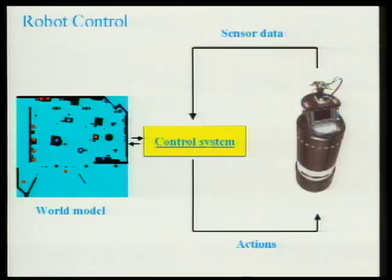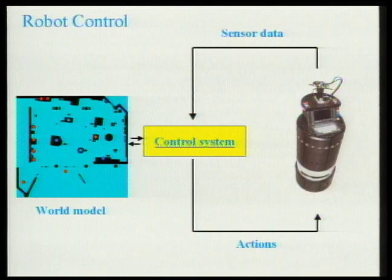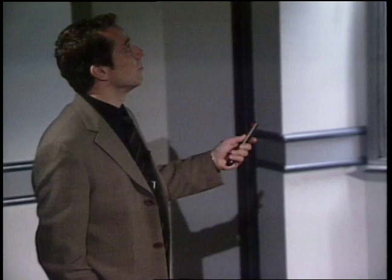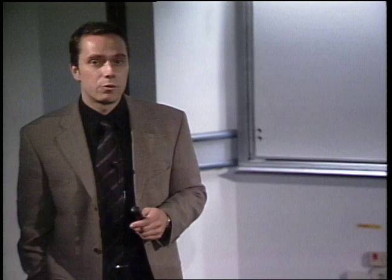On one hand, the sensor data the robot collects is noisy, which means the robot will never get perfect information about the environment. The control system also has to consider that the outcome of actions is uncertain — for example, if you try to guide a robot to a certain room, the door might be closed, or if you tell a robot to move one meter ahead, it might only move 95 centimeters. Finally, the world model is uncertain in several respects: it is mostly incomplete, it does not cover the complete dynamics of the environment, and it is often based on uncertain sensor data.